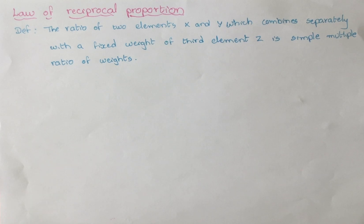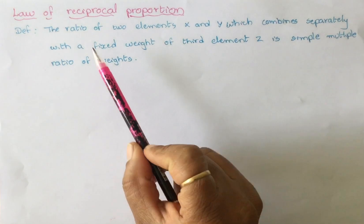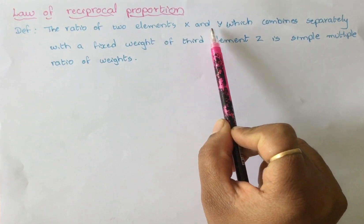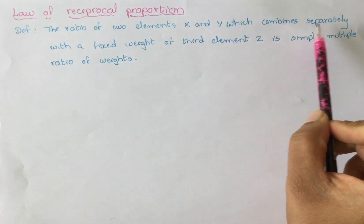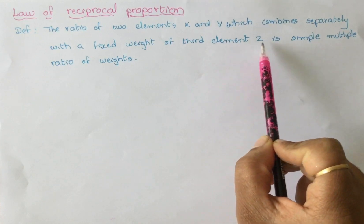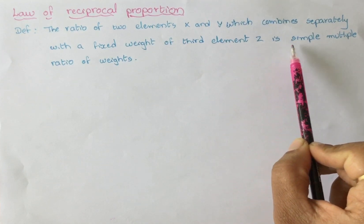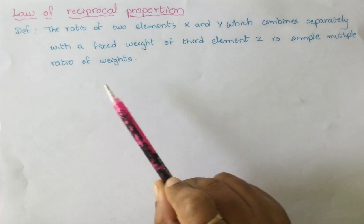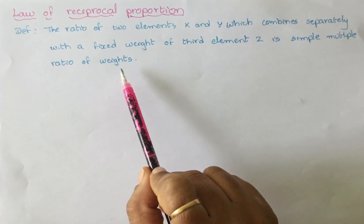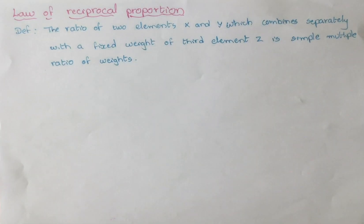Let us discuss the law of reciprocal proportions. This law states that the ratio of two elements, x and y, which combine separately with a fixed weight of a third element, let's say z, should always be a simple multiple ratio of their weights.